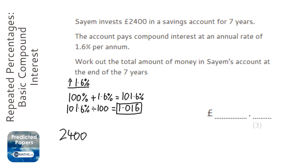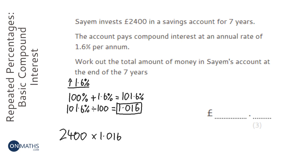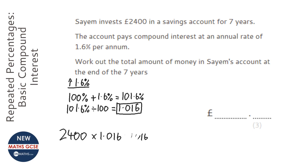Whenever you multiply something by 1.016 it will increase it by 1.6 percent. We've got £2400, and if it were just one year we'd times it by the multiplier. But we've got seven years, so rather than multiplying by 1.016 seven times, we can use something better — we raise the multiplier to the power of seven, which is exactly the same thing.